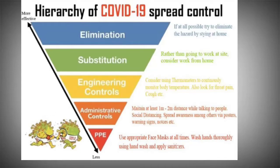Hello friends, welcome to my YouTube channel Info Safety. Today we discuss the hierarchy of COVID-19 hazard control. There is one method called hierarchy of control, and it has five elements from most effective to least effective: elimination, substitution, engineering control, administrative control, and PPE.